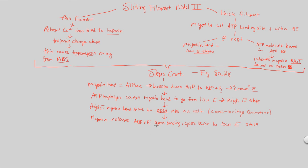Remember how we said new connections form and old connections break? This is basically what we're seeing here. Myosin releases ADP plus Pi upon binding - that was a new connection that formed, and then it breaks. This is going to cause it to go back to a low energy state.